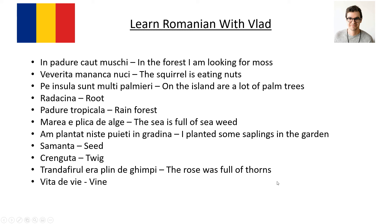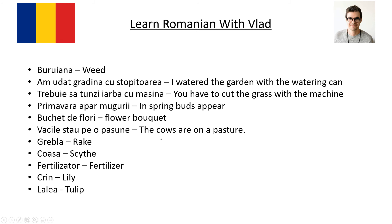Vița de vie means vine. Buruiană is weed — for example, acest teren este plin de buruieni, this field is full of weeds. Am udat grădina cu stropitoarea — I water the garden with a watering can. Trebuie să tunzi iarba cu mașina — you have to cut the grass with a grass-cutting machine. Primăvara apar mugurii — in spring, buds appear, you can see them sometimes popping up through the ice.